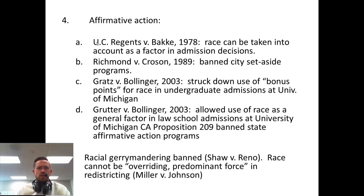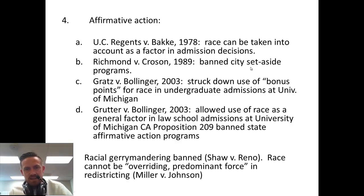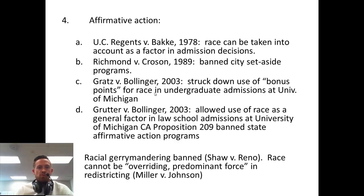Let's look at affirmative action over the years. The big case to know is UC Regents v. Bakke in 1978, which says that race can be taken into consideration as part of someone's admission into college. In 1989, Richmond v. Croson banned city set-aside programs. In Gratz v. Bollinger in 2003, it struck down the use of bonus points for race — using bonus points for race is not okay, but you can consider race; it cannot be the overwhelming factor.